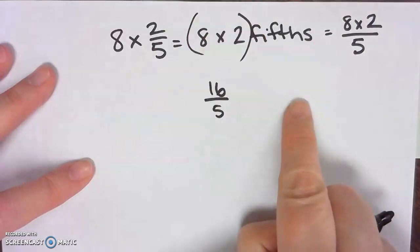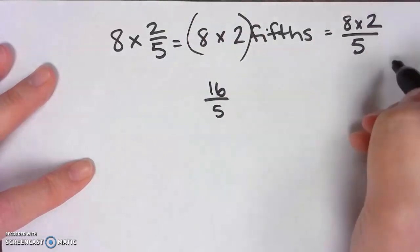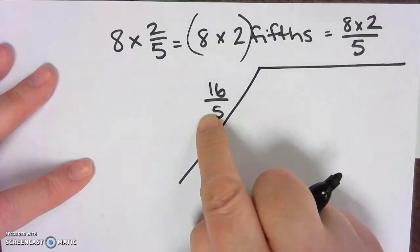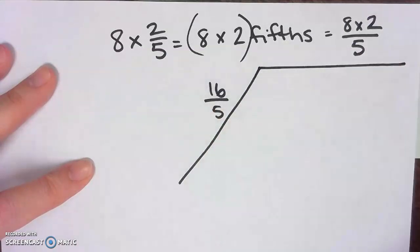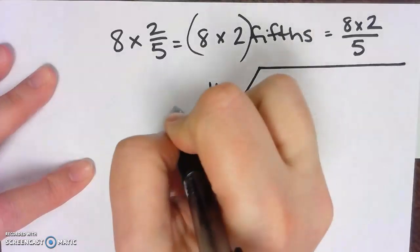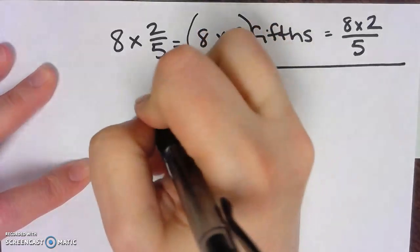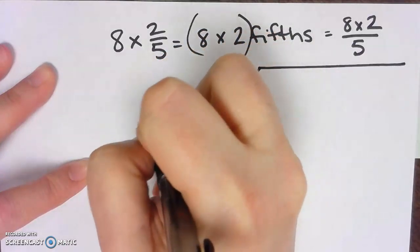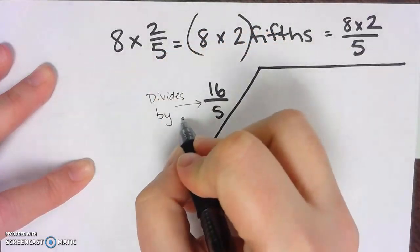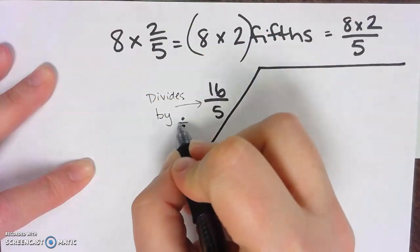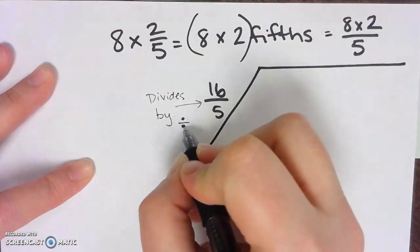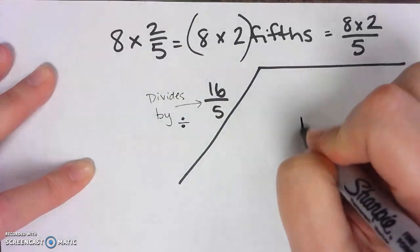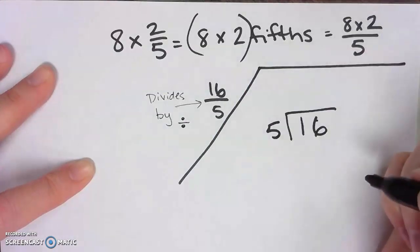Okay, we're going to take this one step further because soon Zearn is going to make you turn this improper fraction into a mixed number. And we need to remember that this little fraction bar actually has a meaning, and that it means divides by. That's why it looks so similar to a division symbol. So 16 divided by 5.